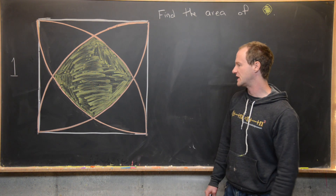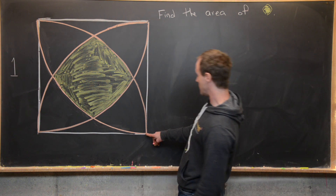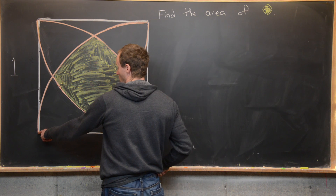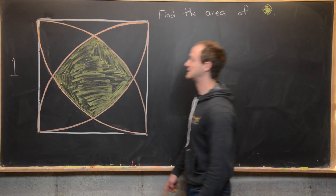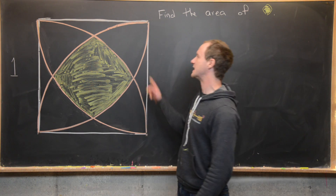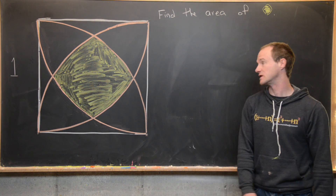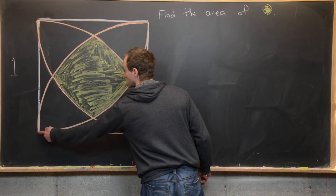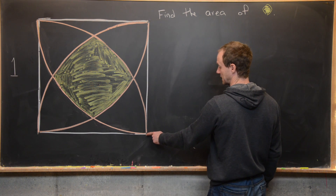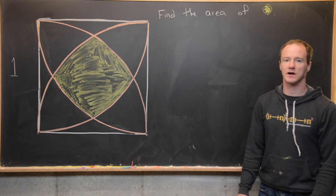They're constructed in the following way. This circle from one vertex to another is centered at the opposite vertex, giving it a radius of one. All of the other circles are symmetrically constructed in the same way.